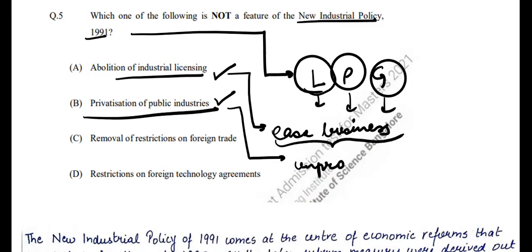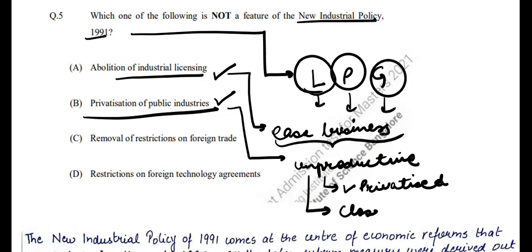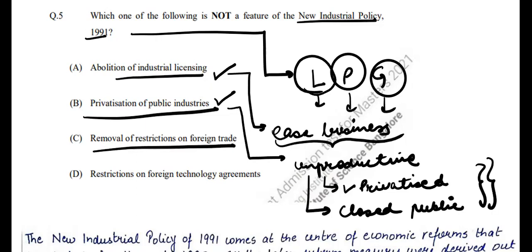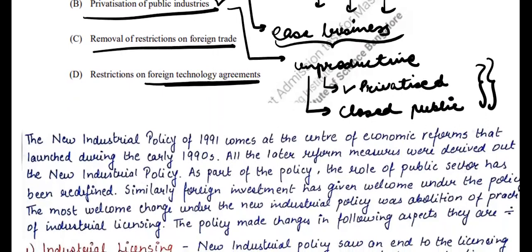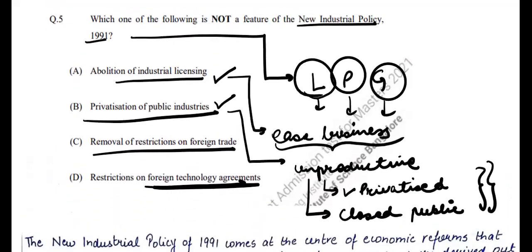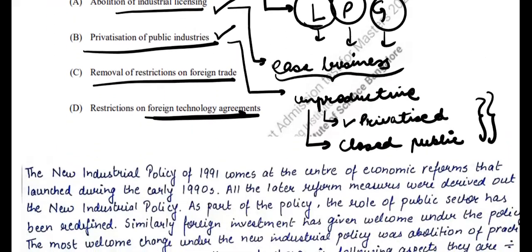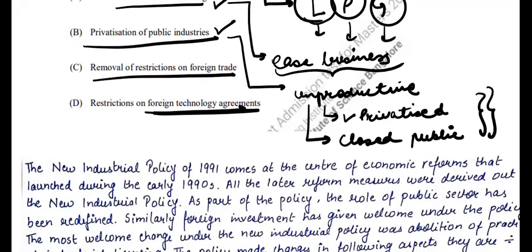Two main initiatives were taken: first, unproductive public sector units were privatized; second, many were closed down. Removal of restrictions on foreign trade was part of globalization and was implemented. As for restriction on foreign technology agreements — the new policy was actually about removing restrictions, not imposing them. So the answer is D.